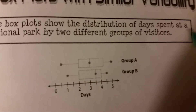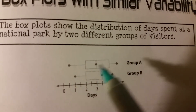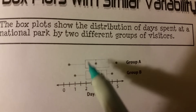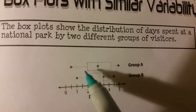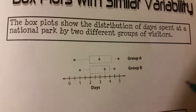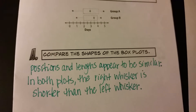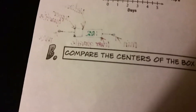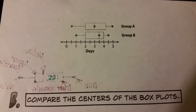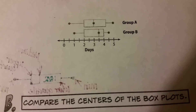A way to remember this: think of a cat — the box would be the face and the whiskers come out from the face. That's how to remember it's a box and whisker plot. Now let's compare the shapes of the box and whiskers on the same plot.